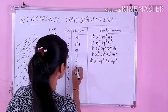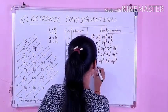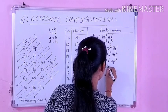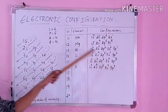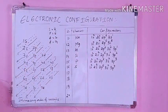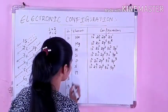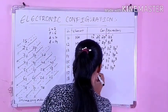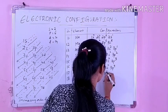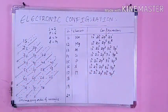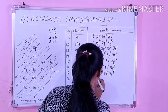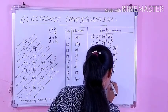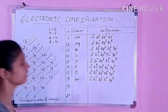For sulfur (Z=16): 1s² 2s² 2p⁶ 3s² 3p⁴. For chlorine (Z=17): 1s² 2s² 2p⁶ 3s² 3p⁵. For argon (Z=18), your noble gas: 1s² 2s² 2p⁶ 3s² 3p⁶ — the p orbital is now completely filled.